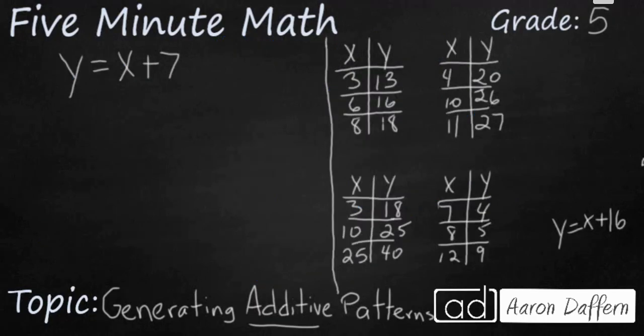Now it's time for you to try. You've got two practice problems here. First, you have a rule here: y equals x plus 7. Go ahead and create four number pairs that would work with y equals x plus 7. On the right side, I'm giving you the rule y equals x plus 16. You need to match that to one of these four tables. When you have your answer, unpause the video and check your work.